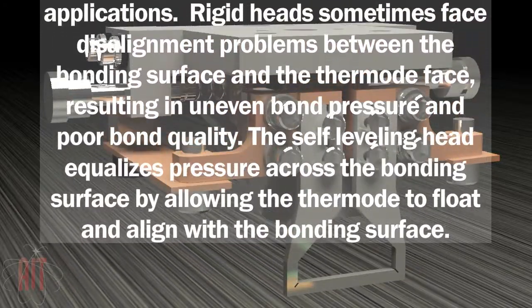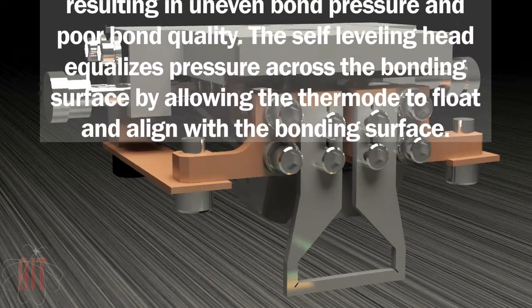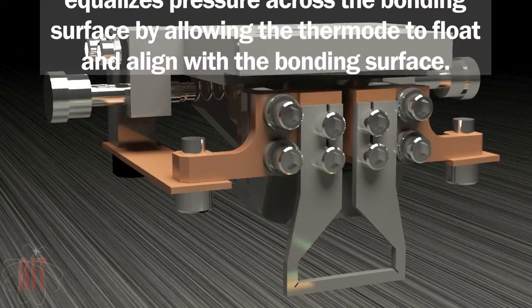The self-leveling head equalizes pressure across the bonding surface by allowing the thermode to float and align with the bonding surface.